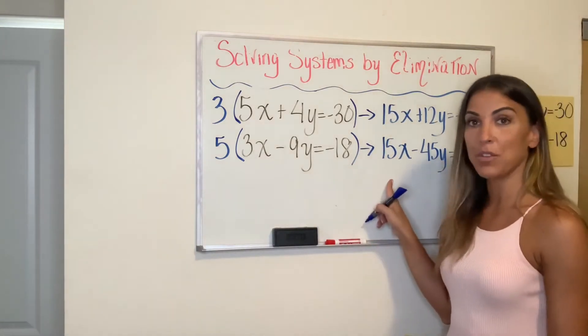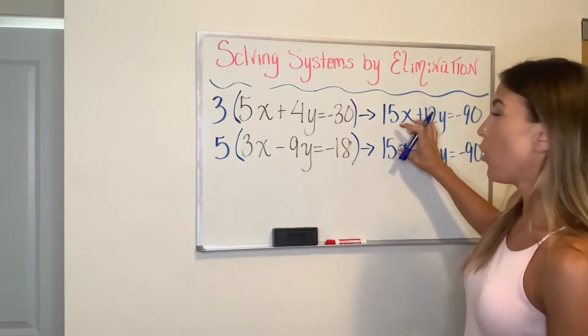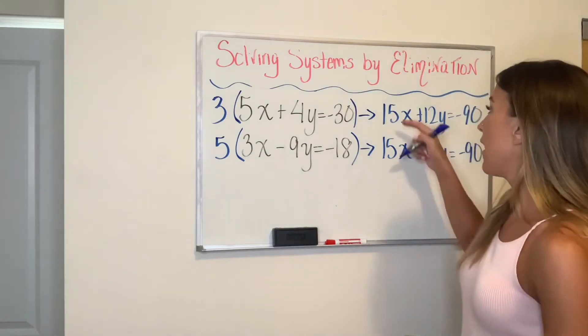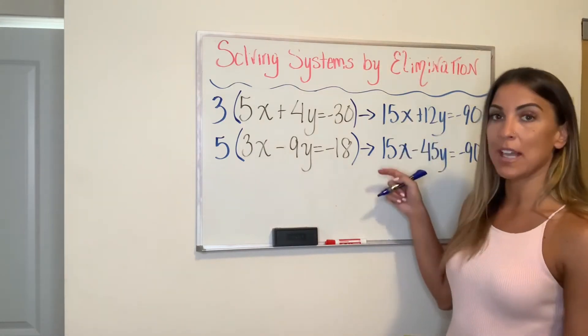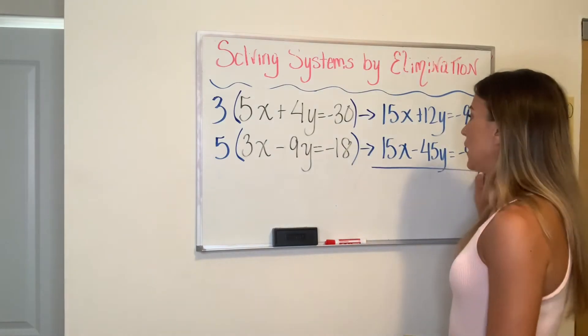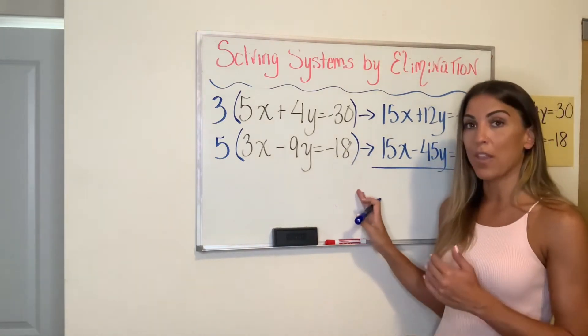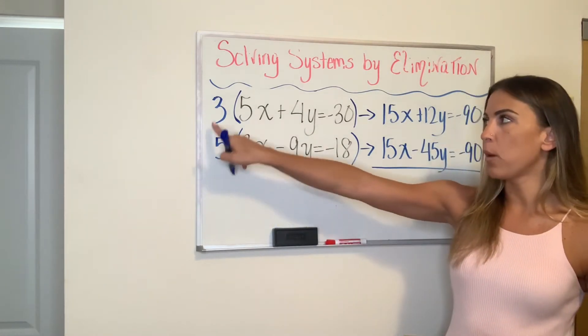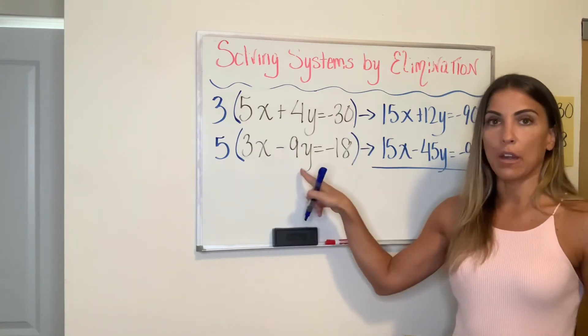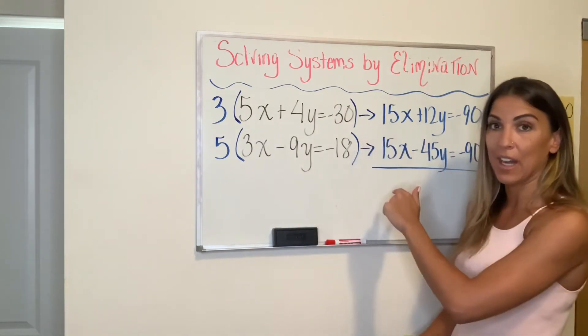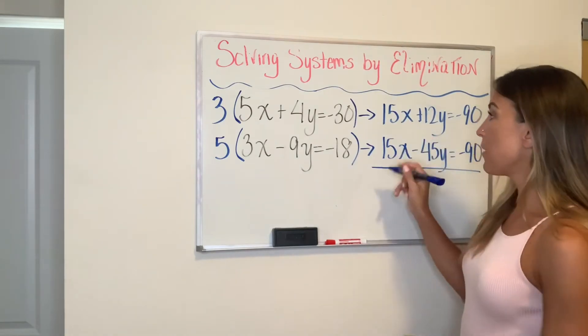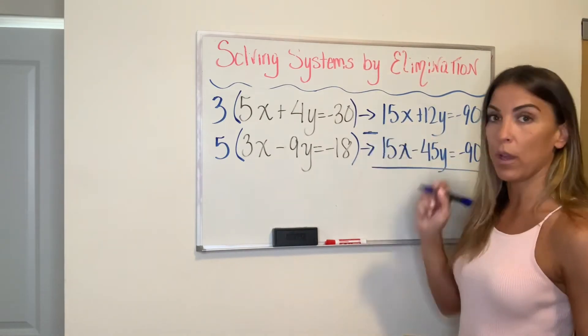And now I've achieved having, well, I have the same coefficients. Remember, you can either have the same or you can have the opposite. So because I have the same coefficients, I'm going to subtract my equations. If you really like adding the equations instead and you wanted the opposite, what you would have done here is multiply one of these by either multiply the top by a negative three or the bottom by a negative five. Then you'll have a 15 and a negative 15. I ended up with the same exact coefficient. So now I'm going to subtract these two equations.